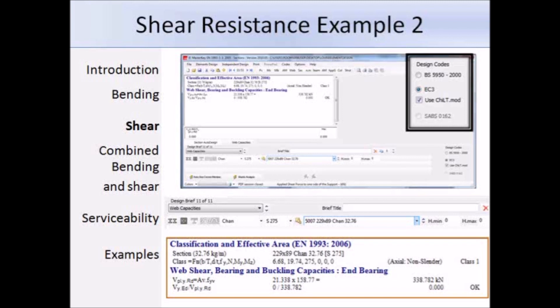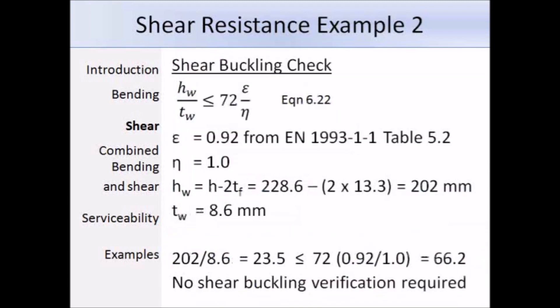Now that the shear resistance has been worked out, we need to check if we need to check for shear buckling. We have this expression 6.22 and if it's satisfied then we don't need to check for shear buckling. Epsilon we can get from the bottom of table 5.2 and for a yield strength of 275 N/mm², epsilon is equal to 0.92. Eta, which can be conservatively taken as 1, h_w is the height of the web and it's overall height minus 2 times the flange thickness, so we get 202 mm. And then we have the web thickness, t_w, which is 8.6 mm. Substituting the values, we get 23.5 on the left hand side, 66.2 on the right hand side, so 23.5 is less than 66.2, so the expression is satisfied and no shear buckling verification is required.